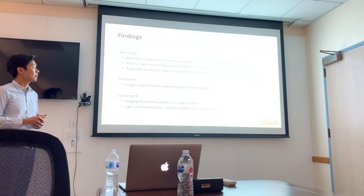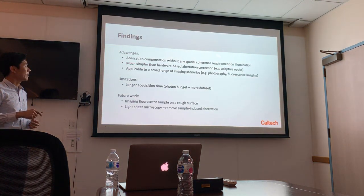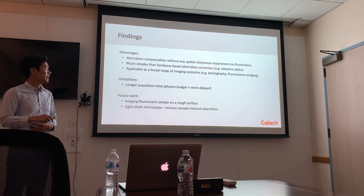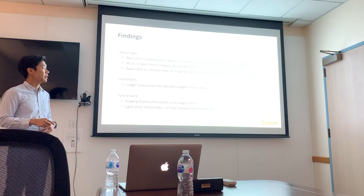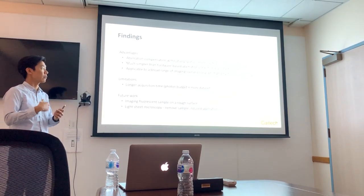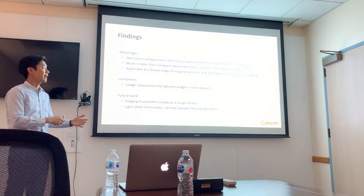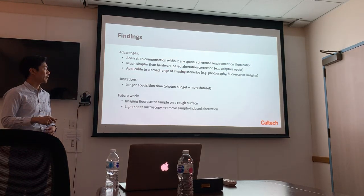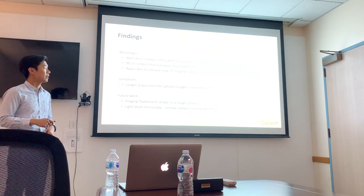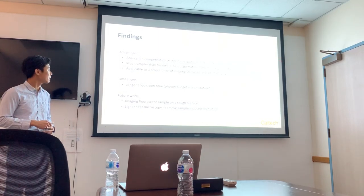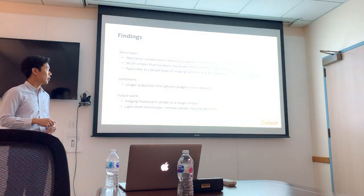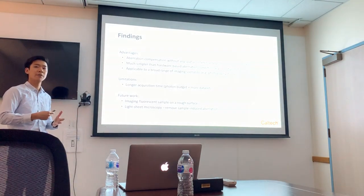The quality was not optimal because we had to account for motion, making this not the most ideal imaging showcase for our setup. Advantages of this method: aberration compensation can be done without any spatial coherence requirement on illumination, and it's much simpler than hardware-based adaptive optics, which consists of a dynamic wavefront corrector and a wavefront measurement device. We only need an SLM and post-processing to compensate for aberration computationally. This is applicable to a broad range of imaging scenarios — not only biological samples but also general photography. One major limitation is longer acquisition time, since you need more data and a larger photon budget for the deconvolution to work well. Future work includes applying this to imaging fluorescent samples on rough surfaces and light-sheet microscopy to remove sample-induced aberrations.